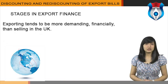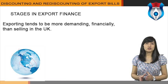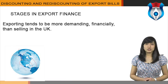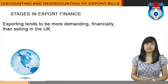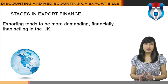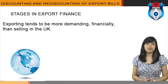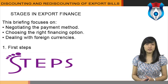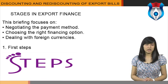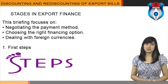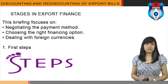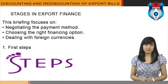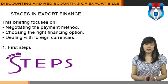Exporting tends to be more demanding financially than selling in the UK — consignments are usually larger, lead times are longer, and the risks are more difficult to control. Negotiating the terms of an export sale is a matter of balancing the risks and the costs. At the same time, one may need to take into account the problems of handling payment in foreign currencies. This briefing focuses on negotiating the payment method, choosing the right financing option, and dealing with foreign currencies. The terms of an export sale must satisfy the customer — we need to agree on the terms of delivery covering the division of responsibility for transport costs and for the risk of loss or damage in transit. Standard international terms are set in Incoterms 2000.